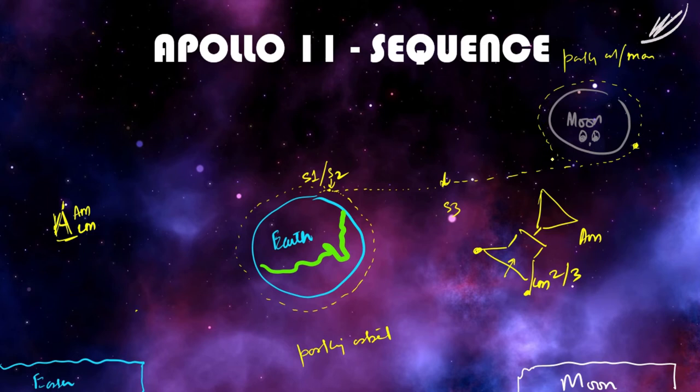After a certain point, the Apollo module, the command center, and the lunar module separate. The Apollo module continues its orbit around the parking orbit of the moon, and the lunar module separates itself and starts descending towards the moon.